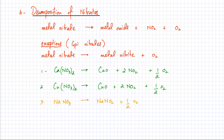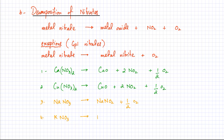Similarly, potassium nitrate is also a group 1 nitrate, so it decomposes in exactly the same way, producing potassium nitrite (KNO2) and half an O2 molecule.